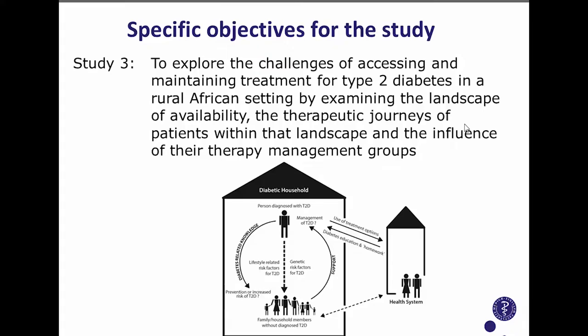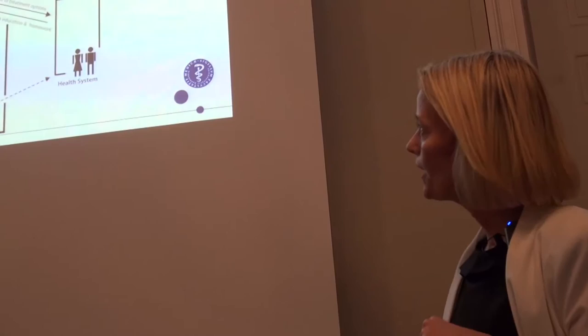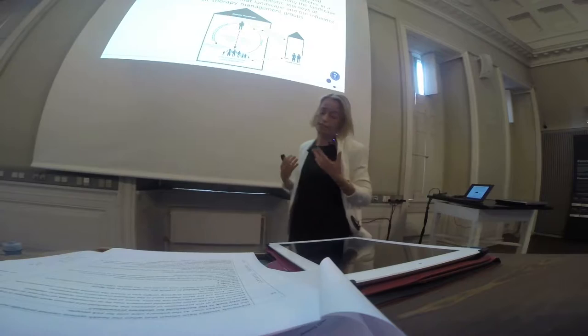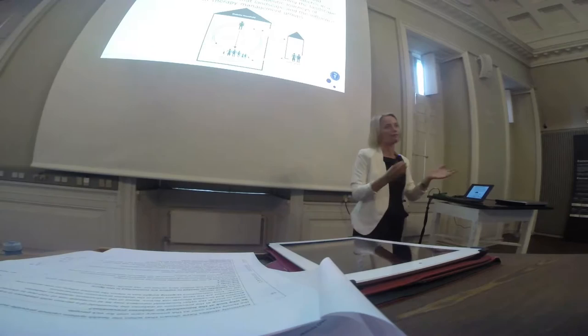In the last sub-study, we wanted to explore the challenges of accessing and maintaining treatment for type 2 diabetes in a rural African setting, by examining the landscape of treatment availability, the therapeutic journeys of patients navigating this landscape, and how their therapy management group — such as family members or others they call when sick — influences their treatment.